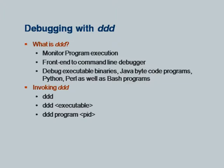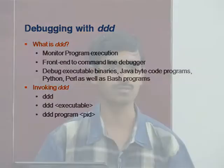How to invoke DDD? The simple command is just 'ddd'. The other way is we can directly specify the executable as a command line argument, or you can attach some running program to DDD. We will see that later. First, let's start with a simple C program debugging.